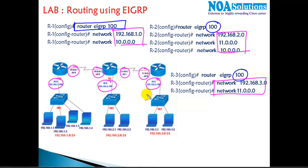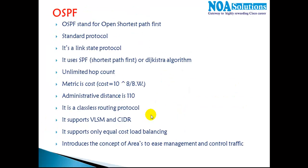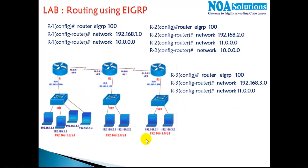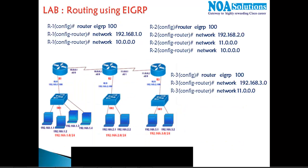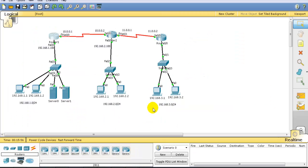After configuration, the verification command is 'show ip eigrp neighbors'. You'll see the neighborship come up and verify that 1.1, 3.1, and 2.1 are all able to communicate with each other. Let's verify how to configure EIGRP — I'll start with Router 1.